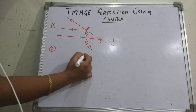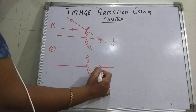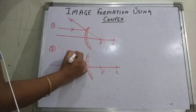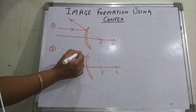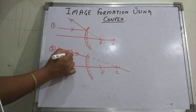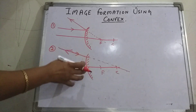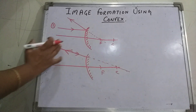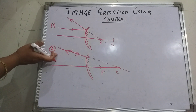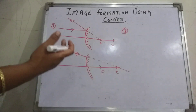Second rule: in case of convex, if a ray is incident in such a manner that when we extend it, it passes through the center of curvature, then it will reflect back along the same path. If a ray of light is incident on the convex such that if we extend it on the right side and it passes through the center of curvature, then it is reflected back along the same path. These rules are the same as in concave, but only the way of presentation differs.